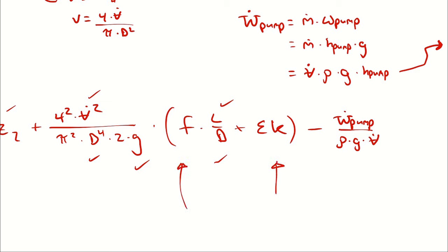Looking back at my equation I have the change in elevation, volumetric flow rate, diameter, gravity, friction factor F, pipe length, diameter, sum of K — the only remaining unknown is the density of water. The density of water at 20 degrees Celsius in the imperial unit system is 1.937 slugs per cubic foot, from Table A1.